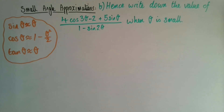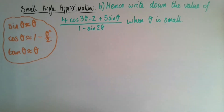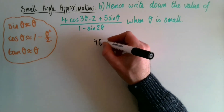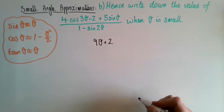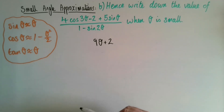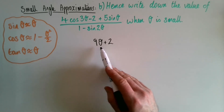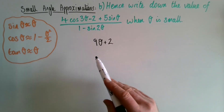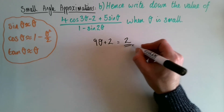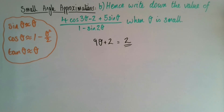Here's Part B. There really isn't much to it — they've already told us the expression equals 9θ plus 2. When θ is small, 9θ is very very small, approaching zero, so 9 times 0 is 0 and you just get 2. That's all it was asking for. Have fun going through the other questions, and next time we'll be moving on to exam practice. See you then!